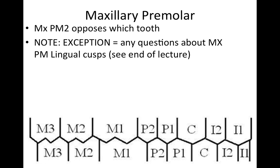For the maxillary first molar: the mesial buccal cusp of the maxillary first molar opposes which anatomical item of which tooth? And second: the distal buccal cusp of the maxillary first molar opposes which anatomical item of which tooth? The mesial buccal cusp of the maxillary first molar opposes the buccal developmental groove of the mandibular first molar. The distal buccal cusp of the maxillary first molar opposes the distal buccal developmental groove of the mandibular first molar. You can see how helpful the picket fence is — it really helps things move a lot faster.